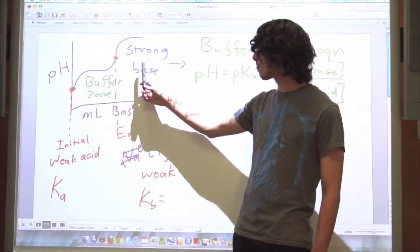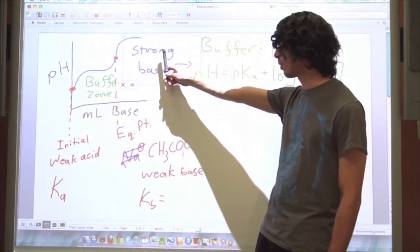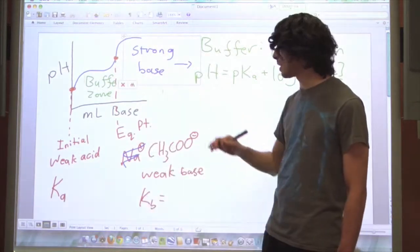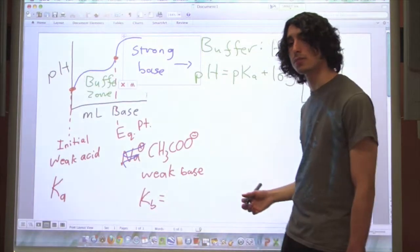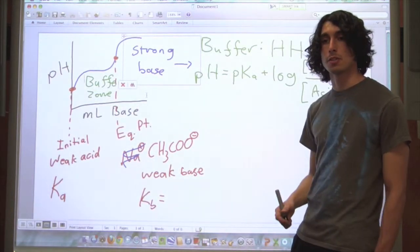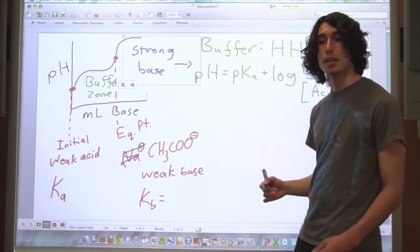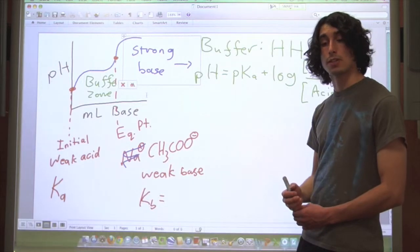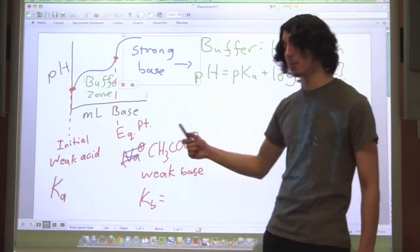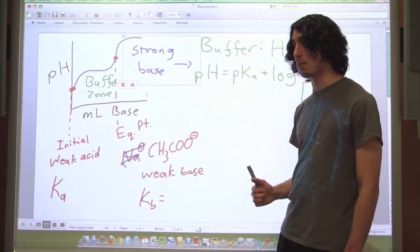So here you can essentially consider any base added beyond this point to be the only base added and just assume it's a strong base solution. And you can solve that just by knowing that a strong base dissociates completely. And then the moles of strong base that you added is equal to the moles of hydroxide ions that you've added for something like NaOH at least. And then you should be able to figure out the pH from there.